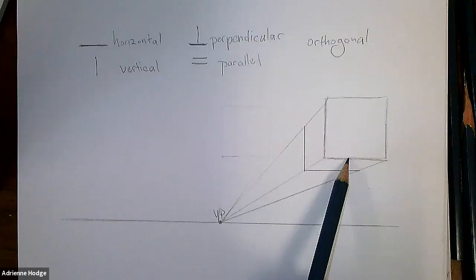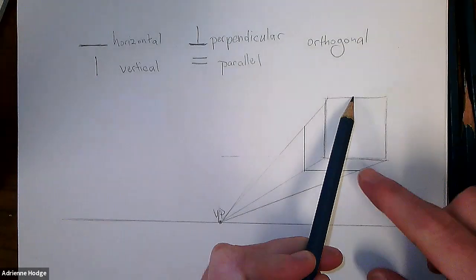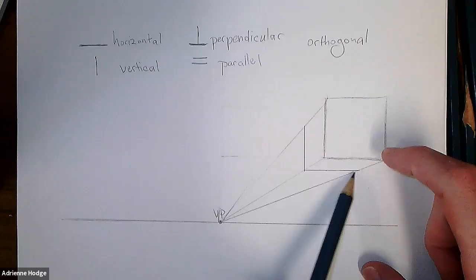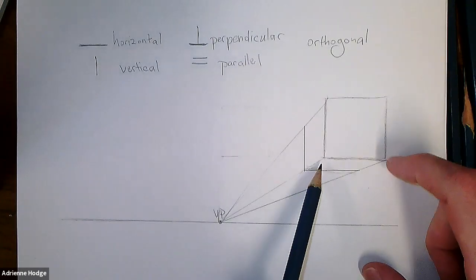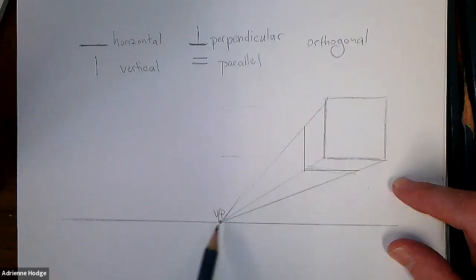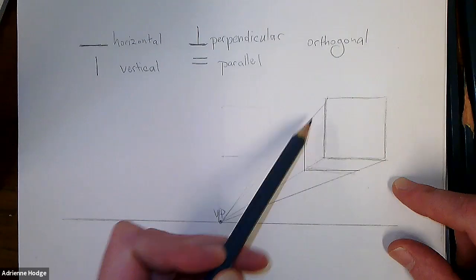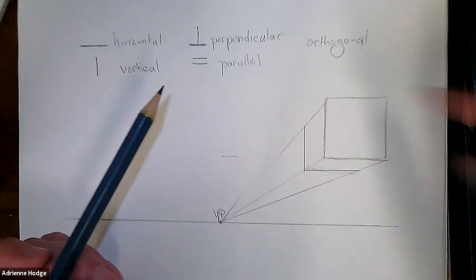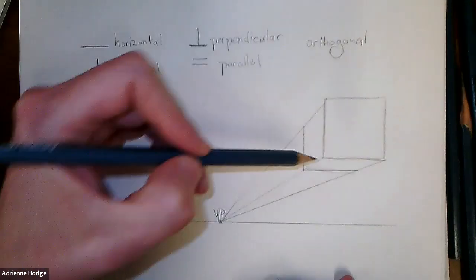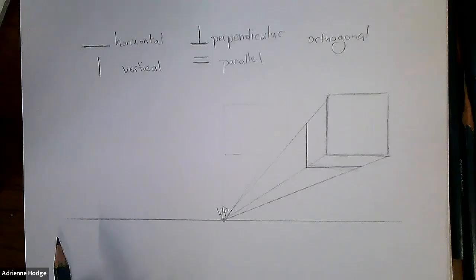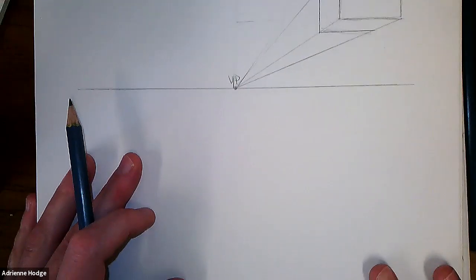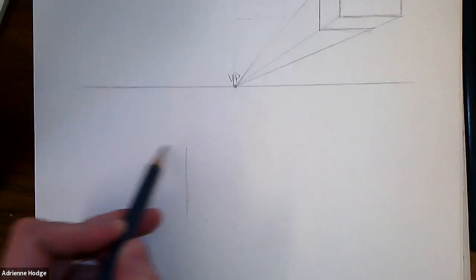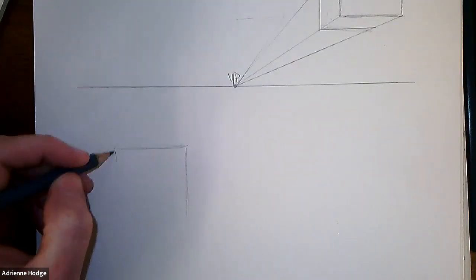I came up with a cheesy way to remember it for adults — kids roll their eyes at me, but adults seem to love it. Think of it as 'buddy lines.' These two horizontal lines are facing me — they're buddies doing the same thing. These two lines are buddies traveling to the vanishing point. If a line is on the side of the box facing you, it remains straight. If it's traveling away from you, it becomes an orthogonal line.